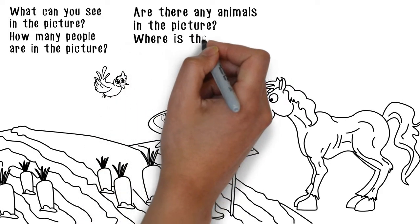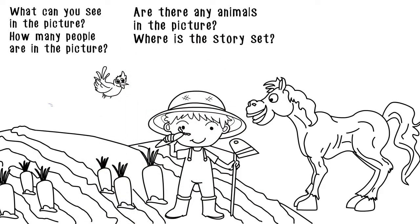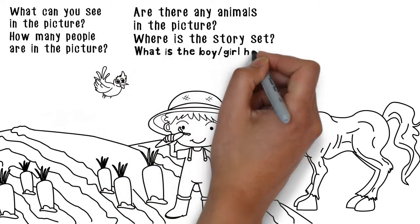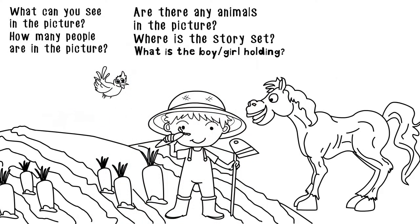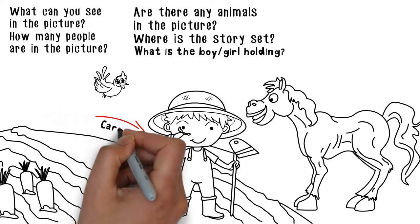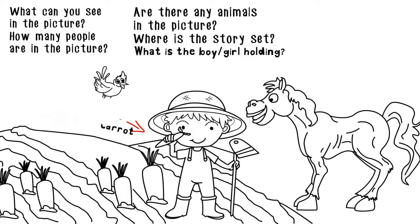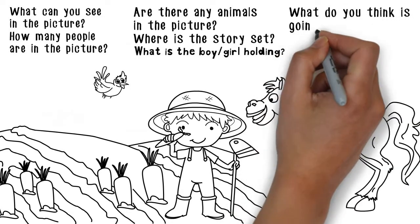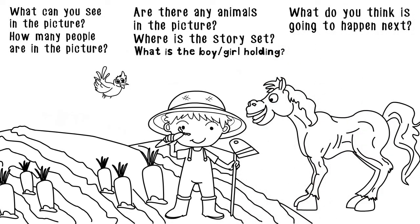Where is the story set? I think the story is set on a farm. What is the boy or girl holding? The boy is holding a carrot. What do you think is going to happen next? I think the boy is going to give the horse the carrot.